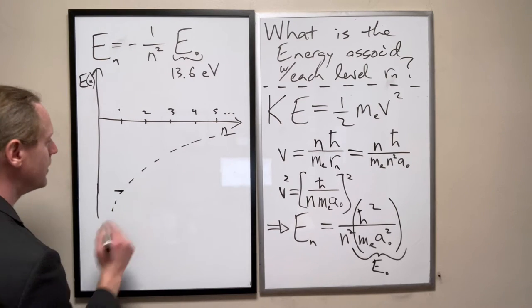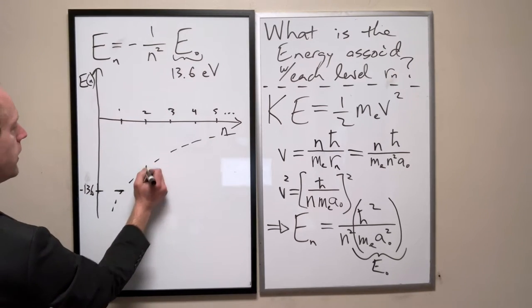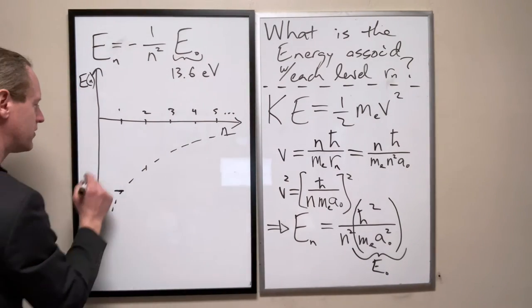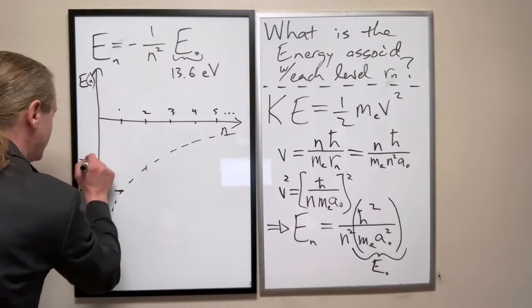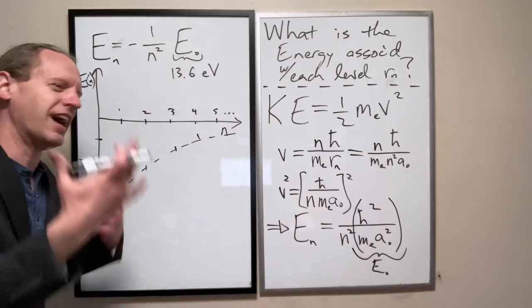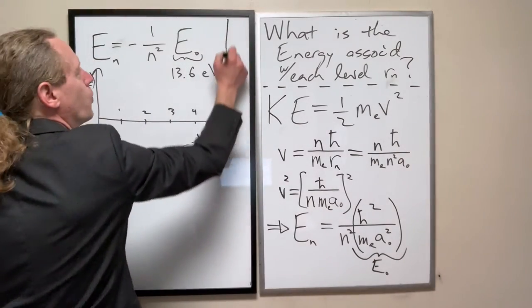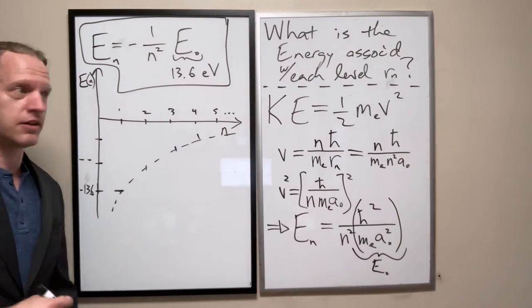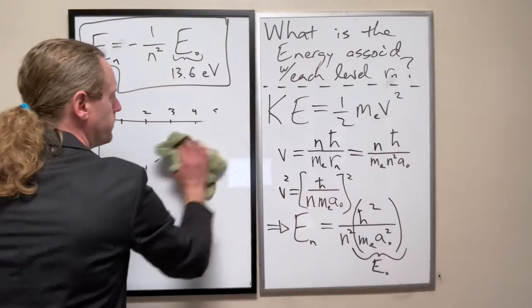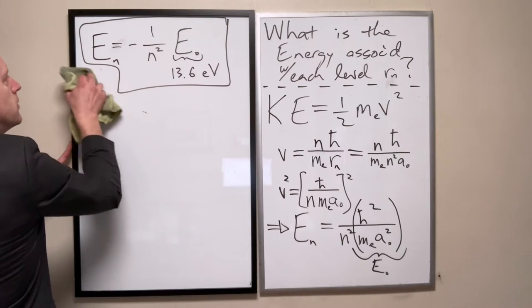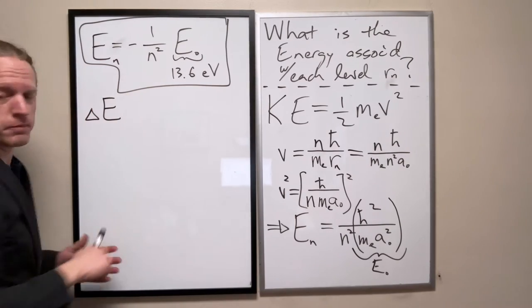So this here is going to be minus 13.6 eV's. This point right here, where it intersects, and I've done a terrible job of accurately doing this, but that's going to be, I think it was something. That's going to be something else. And they get closer and closer again. I apologize, I don't have those numbers off the top of my head. But the whole point of this is that this prediction right here, when you plug in these numbers, will be perfectly consistent with Rydberg's formula.